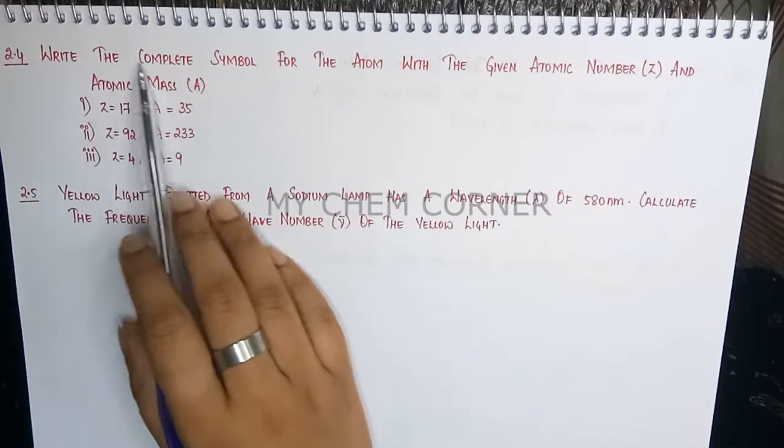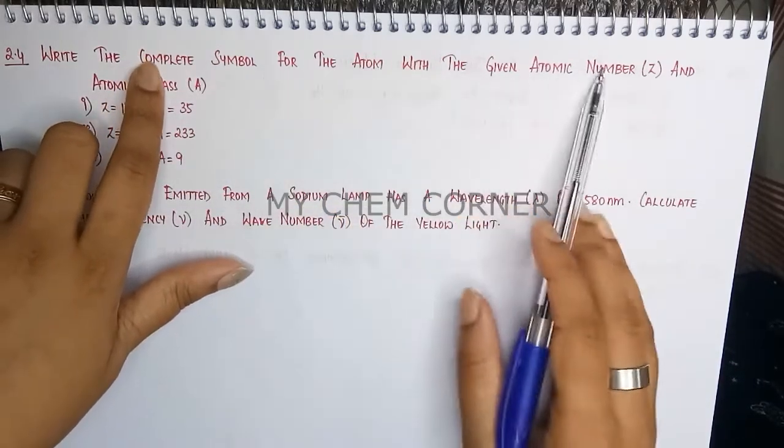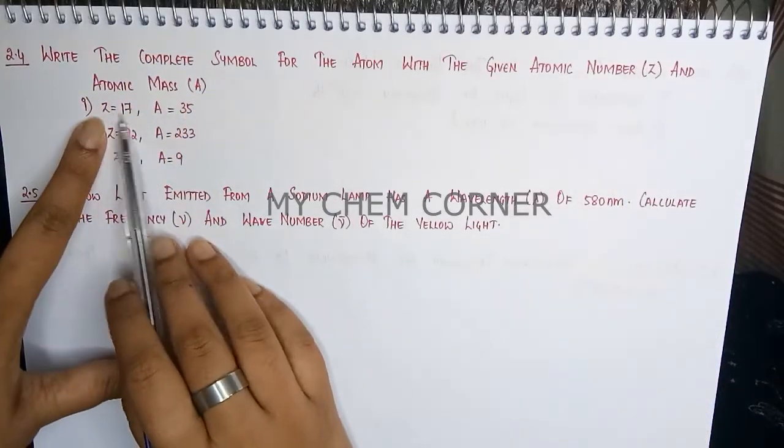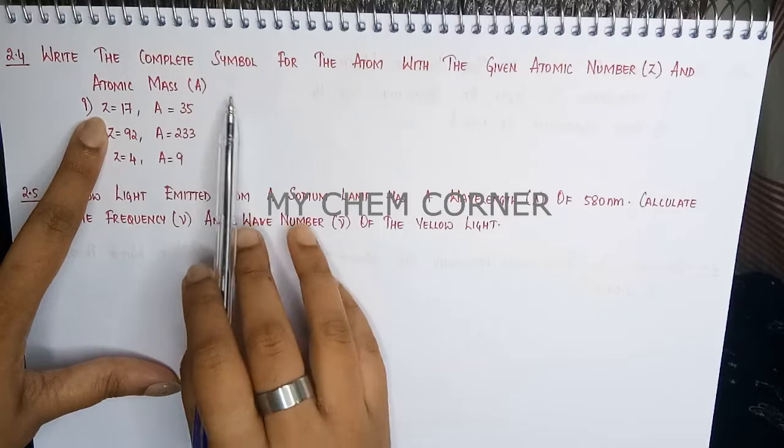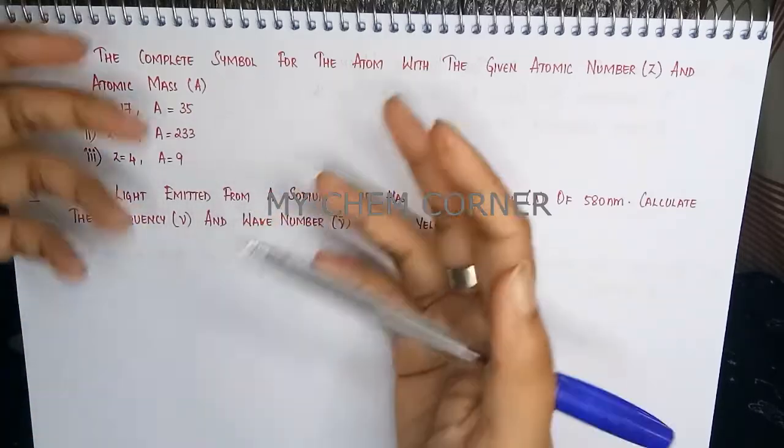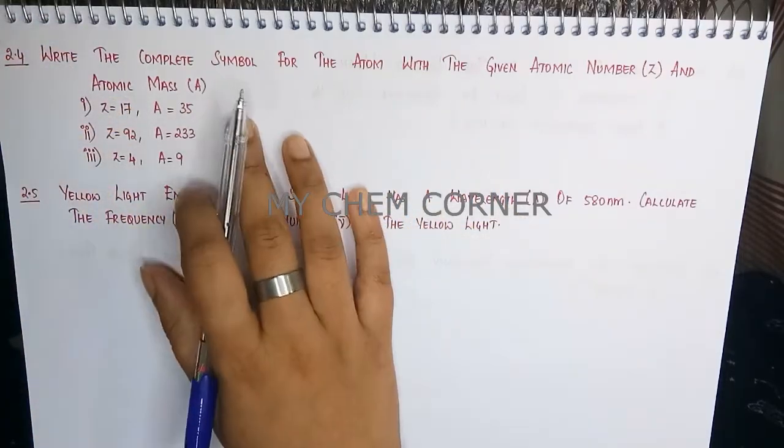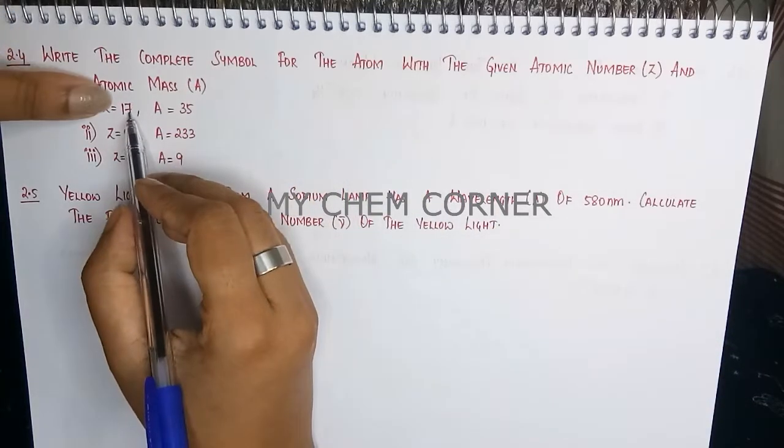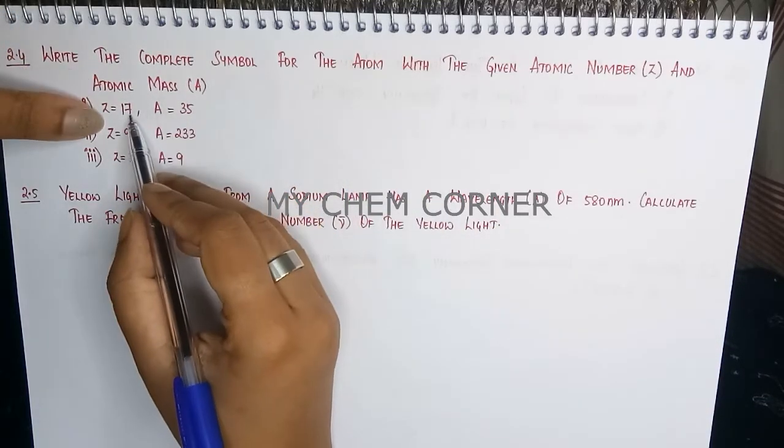The next one is: write the complete symbol for the atom with the given atomic number and atomic mass. So here, atomic number is given, atomic mass is given. You need to write the complete symbol depicting where you write the atomic mass and where you write the atomic number. So here 17 is given and 35 is given.